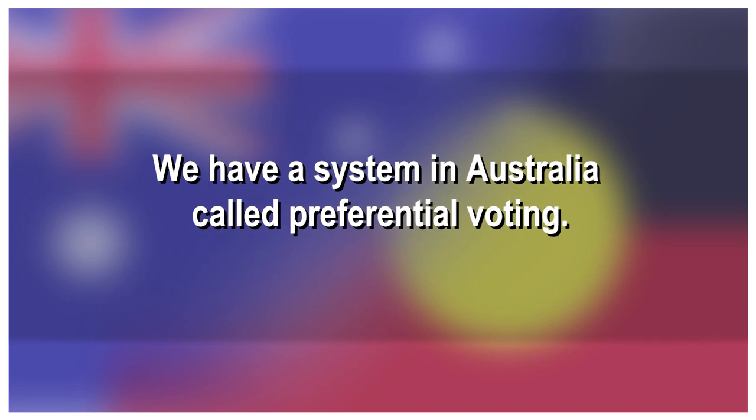We have a system in Australia called preferential voting. What this means is that you don't just walk into a voting booth and pick one party — we have anonymous voting as well. Preferential voting is pretty much exactly what it sounds like: you rank the parties from your most preferred all the way down to least preferred. It's pretty simple, but the way that you write down those preferences changes depending on which house you're voting in.